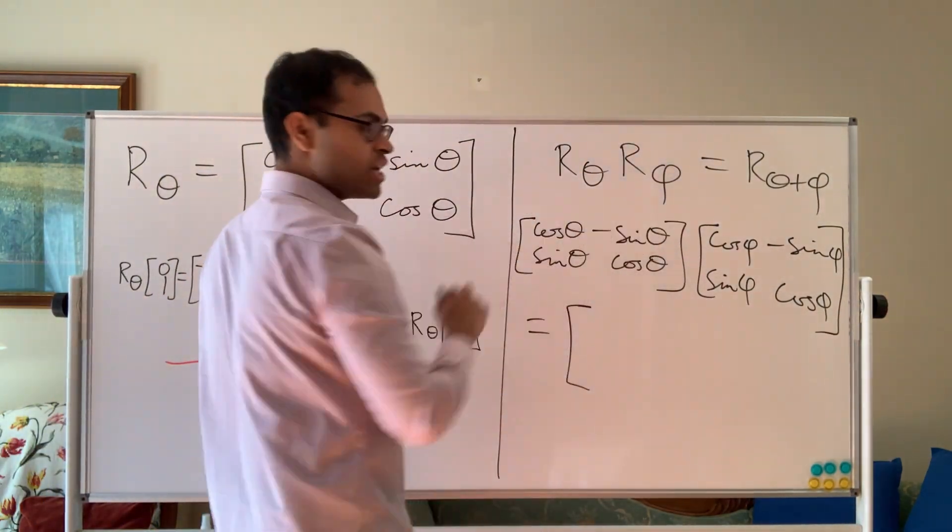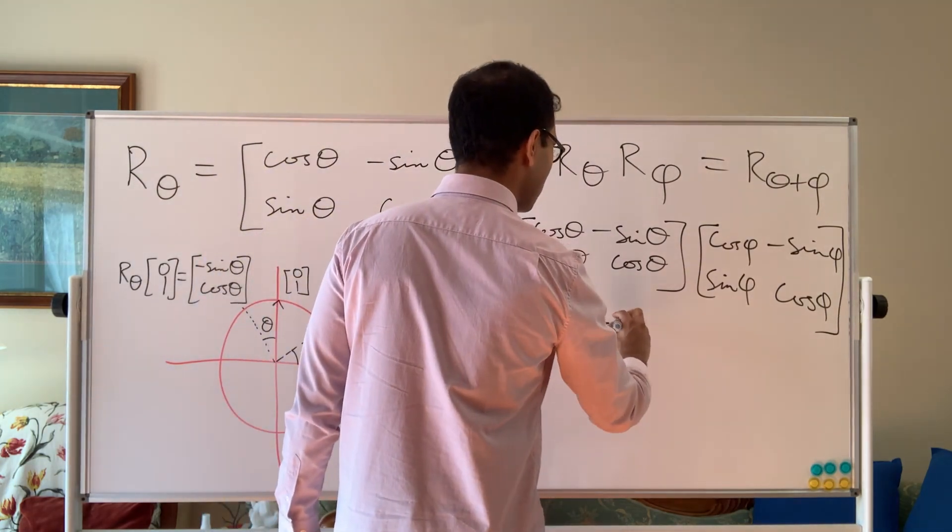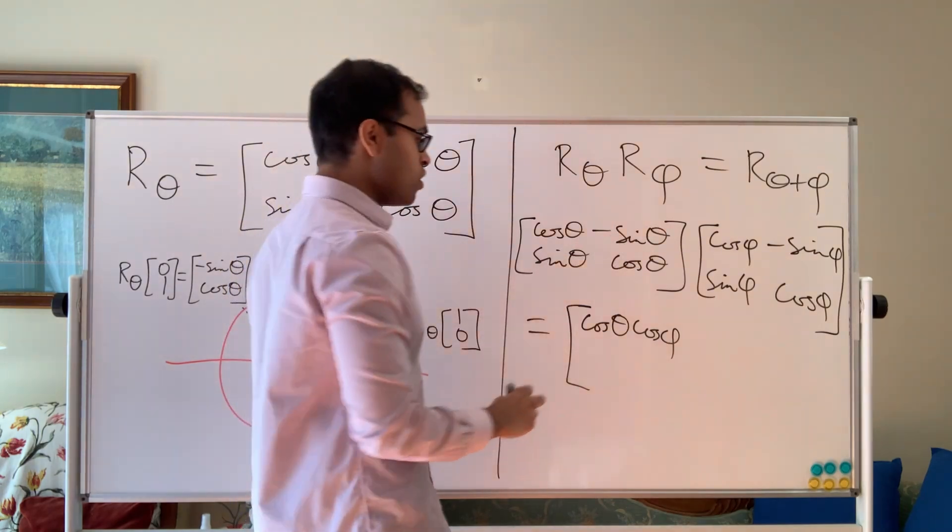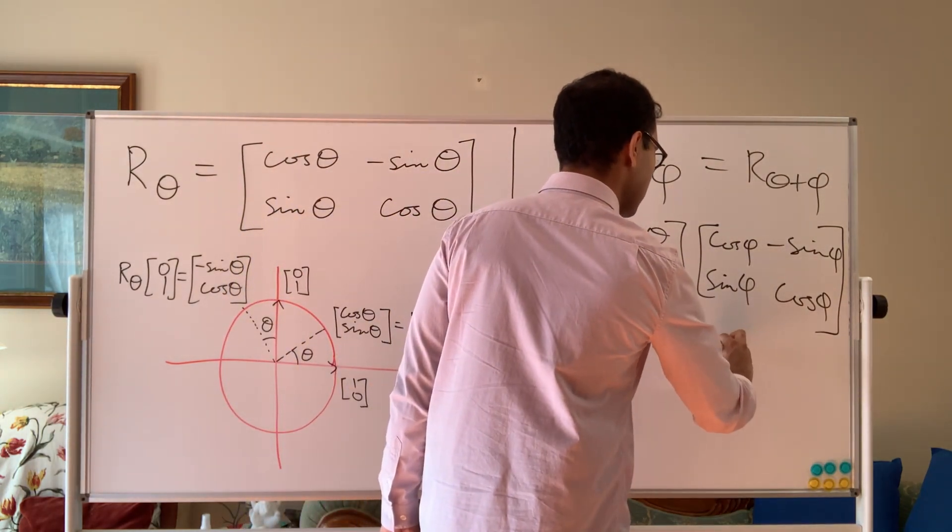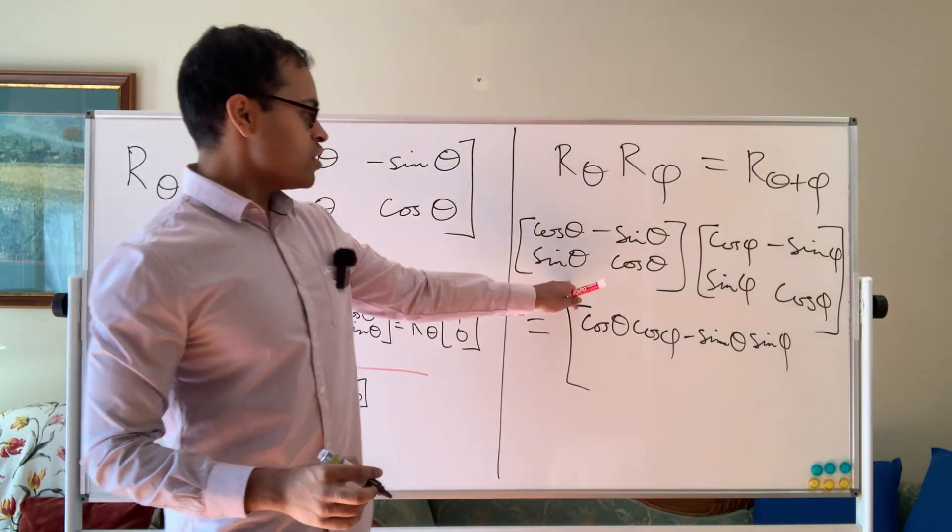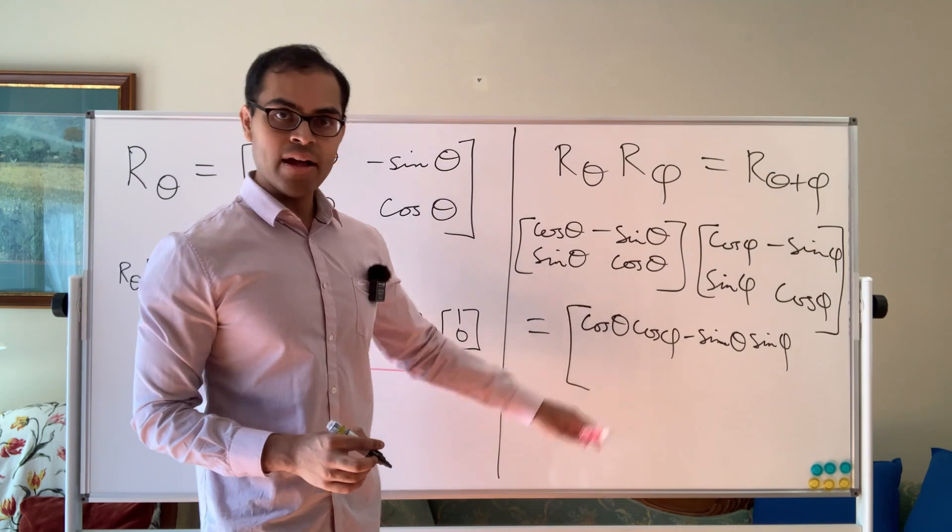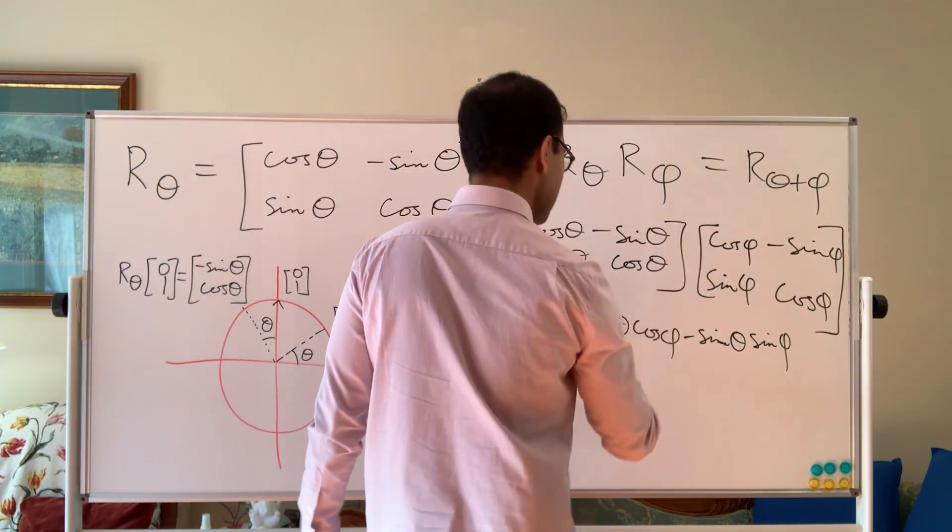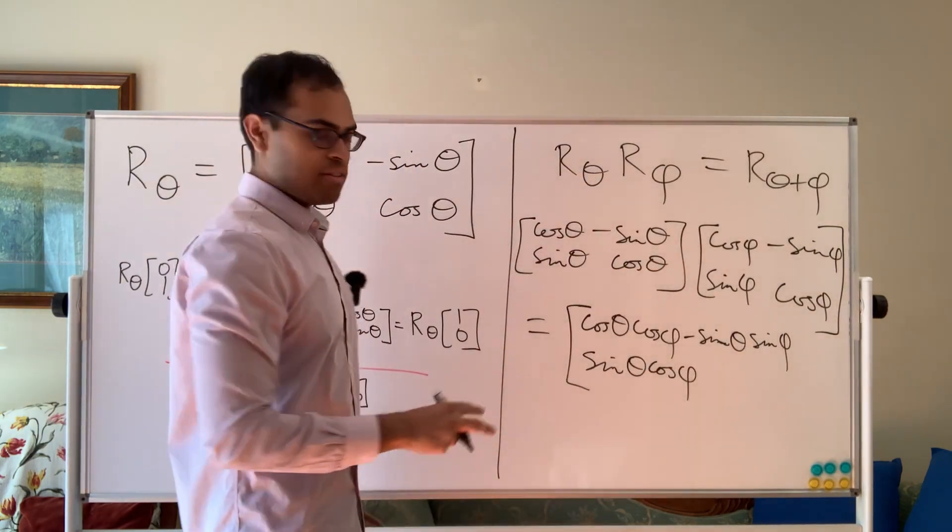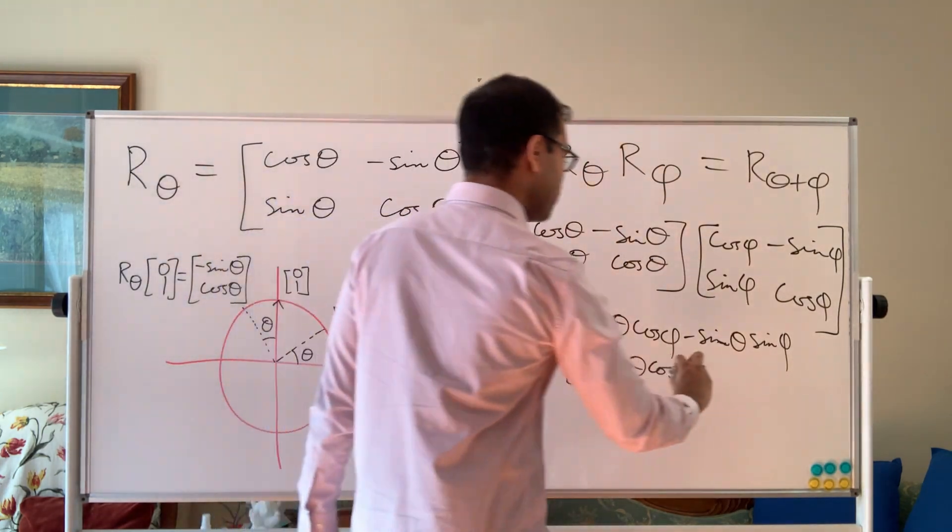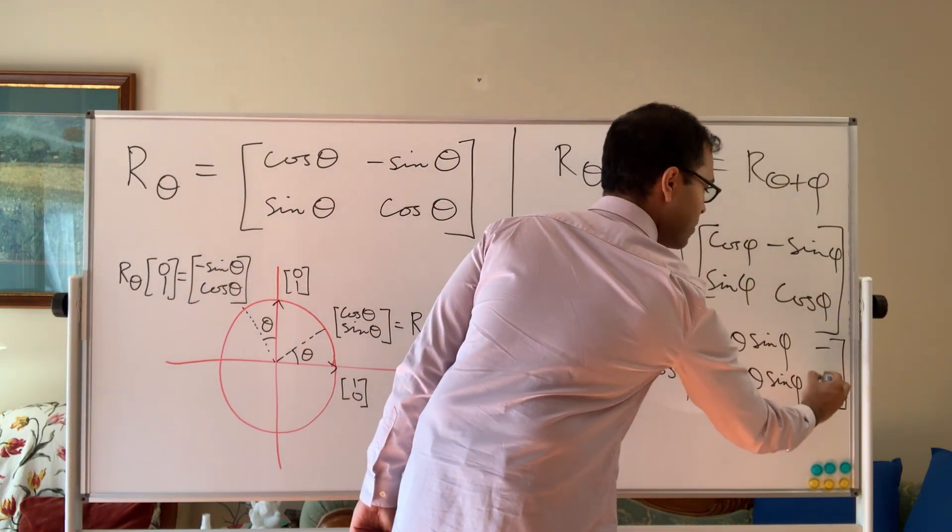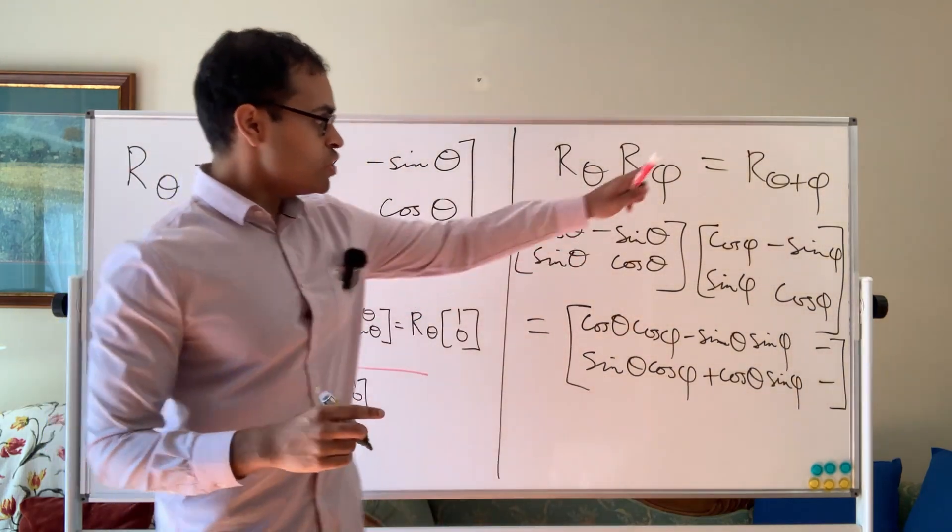We're going to get, basically it's going to be cosine theta cosine phi minus sine theta sine phi. Dot product of the first row with the first column. And in fact, I'm not going to work out everything. I'm just going to work out the second entry here. I'm not going to work out the whole matrix. It's not going to be needed. We're then going to get sine theta cosine phi plus cosine theta sine phi. Dot product of the second row with the first column. And of course, it's a two by two matrix. So you're going to get some entries here.